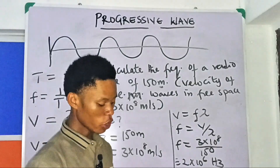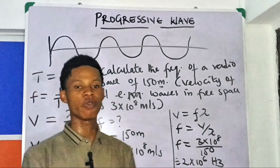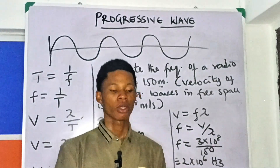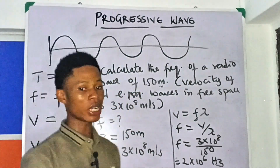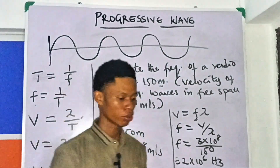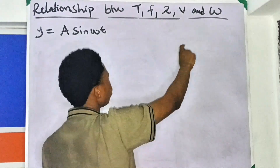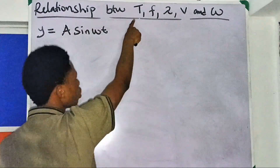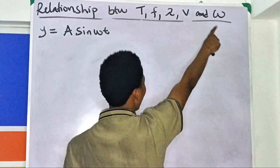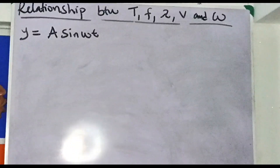Now I want to look at something very important in this topic. Let's look at the relationship between frequency f, wavelength λ, velocity v, and angular velocity ω (omega). Angular velocity is represented by the symbol that looks like a 'w'.